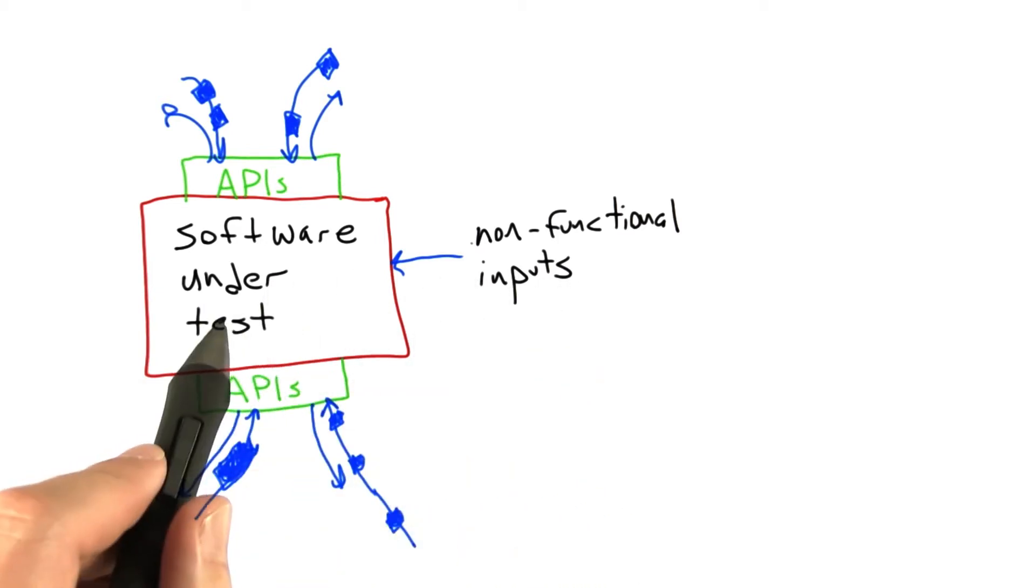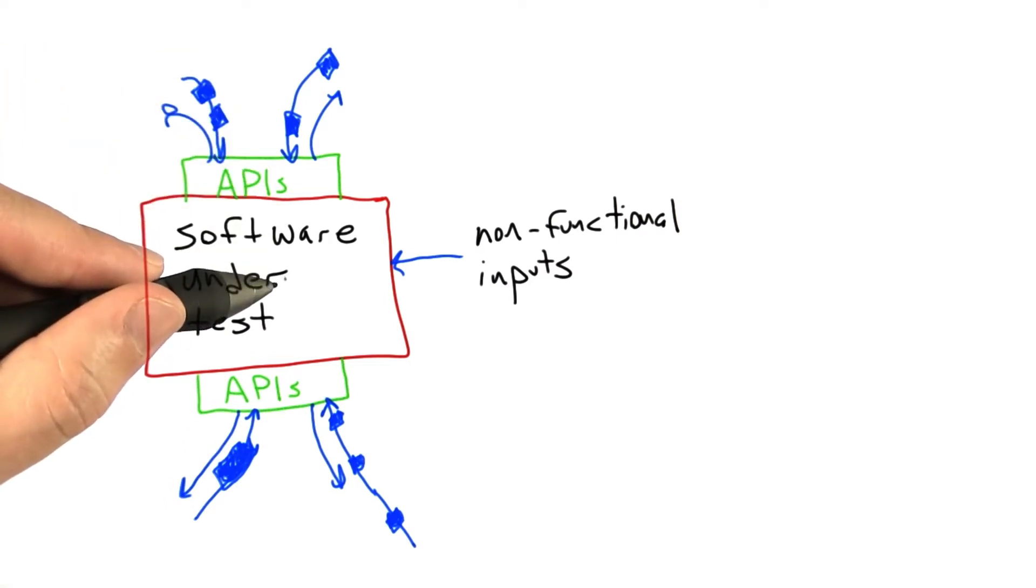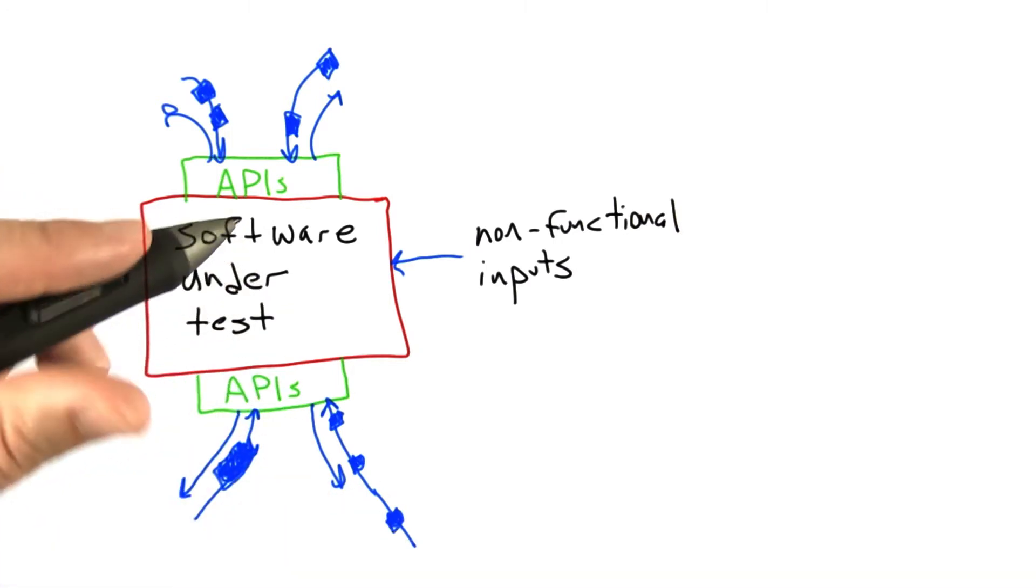These are inputs that affect the operation of the software under test that have nothing to do with the APIs provided by the software we're testing, and nothing to do with the APIs used by the software we're testing. So what are these non-functional inputs?